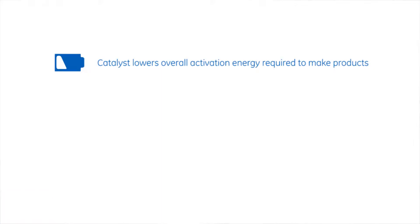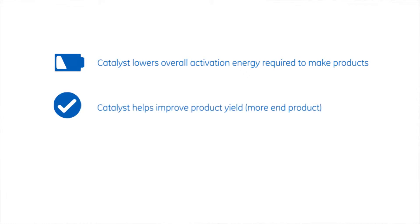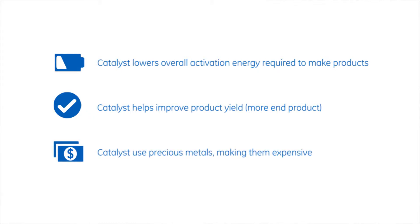Within that refining process, many of these products are made through chemical reactions, which usually involve a catalyst. The catalyst helps lower the amount of energy needed for a reaction to take place, which helps processors with cost. Catalysts also help increase the yield of the desired end products, so you get more of what's of value to a customer. Catalysts are usually made out of precious metals, which are fairly expensive.